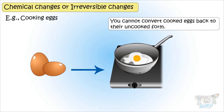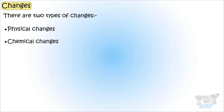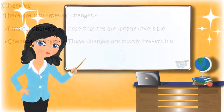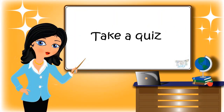So kids, today we learned two types of changes: physical changes and chemical changes. We also learned that physical changes are mostly reversible and chemical changes are irreversible. Now you may go ahead and take a quiz to learn more. Bye bye!